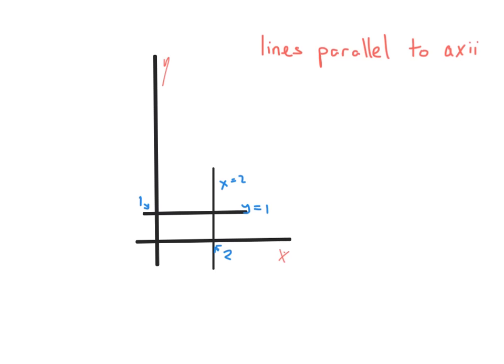For example, this line here — see the way it's going through the number 2 on the x-axis. All the way along this line, x is equal to 2, so that's actually your equation: x equals 2. Likewise, this line, which goes through 1 on the y-axis and is parallel to the x-axis — the equation of that is y equals 1. So as long as it's parallel to either axis, you can use this simple rule.